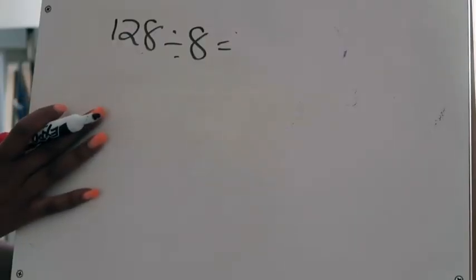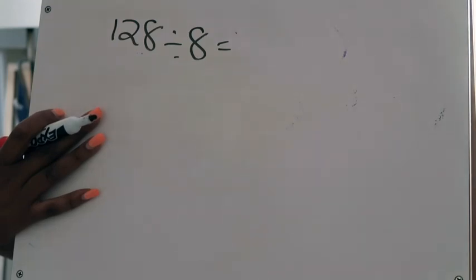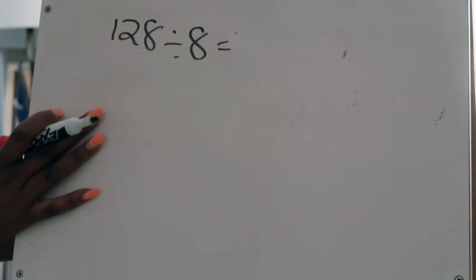Here's our first example from lesson 2.1. In lesson 2.1 we're focusing on how to place the first digit correctly in our quotient and making sure our answer goes up to the proper place value position. To help us do that, we're going to work with compatible numbers to come up with an estimated answer, and then use that estimate to verify we've placed the first digit correctly.